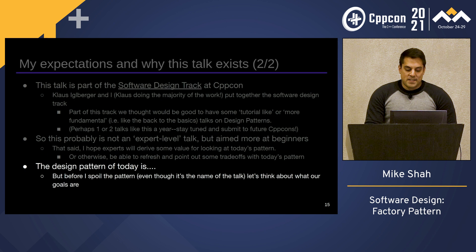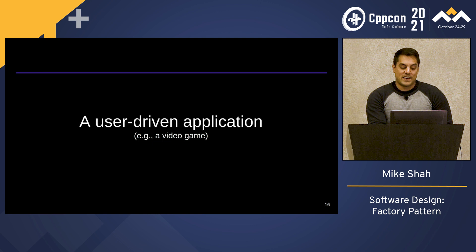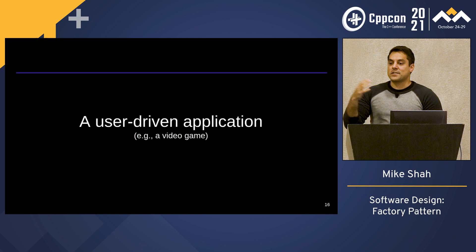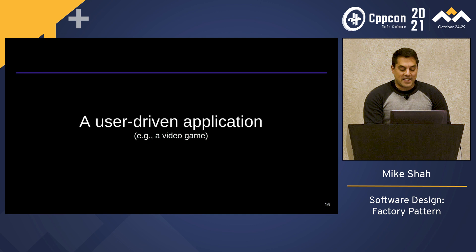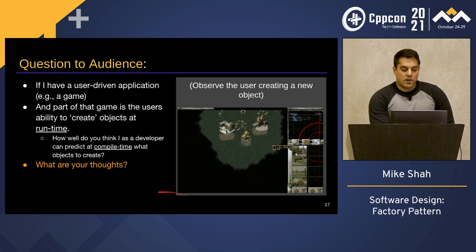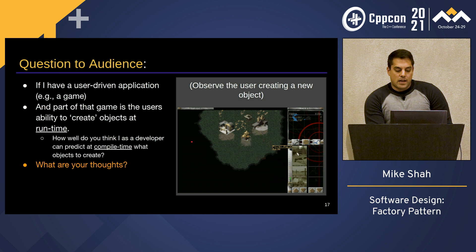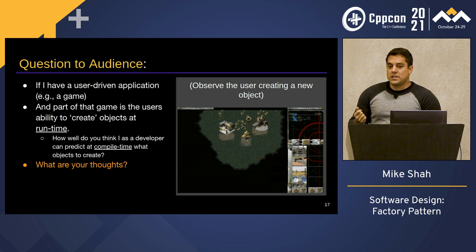The design pattern of today — most of you have seen the title, but let's think about what our goal is in our video game domain. This is a user-driven application: a player's controlling the game, making decisions, creating objects, destroying them. My question to the audience is: if I have a user-driven application where the user gets to create objects — clicking the UI and creating a building — how well can I, as a developer, predict what a user is going to do at compile time? How many objects are they going to create, what types?